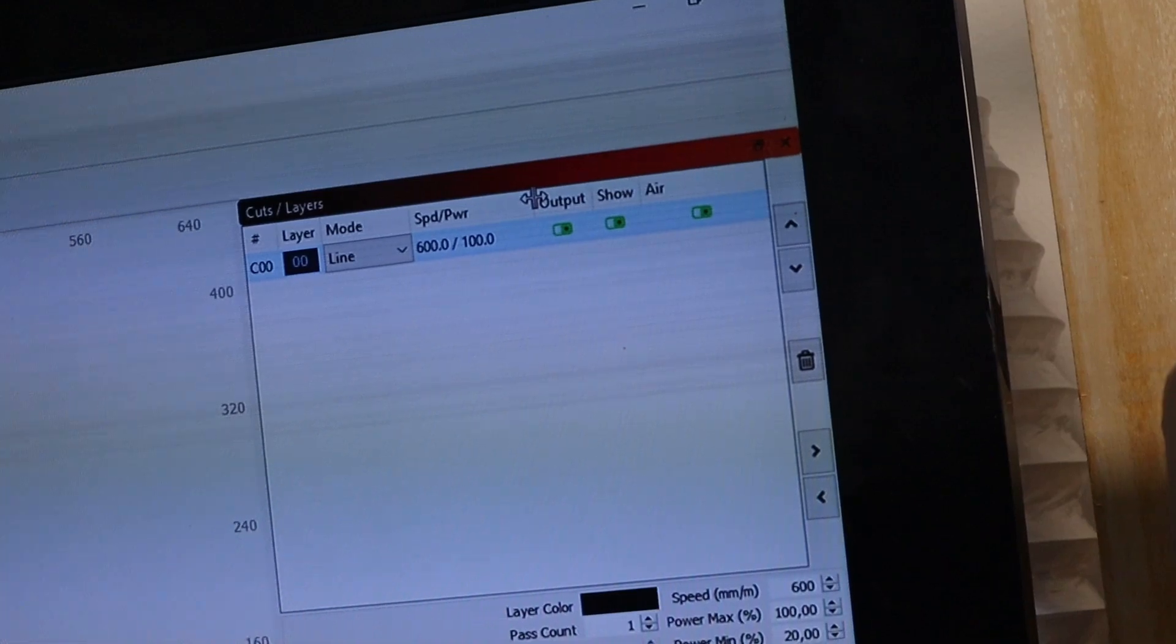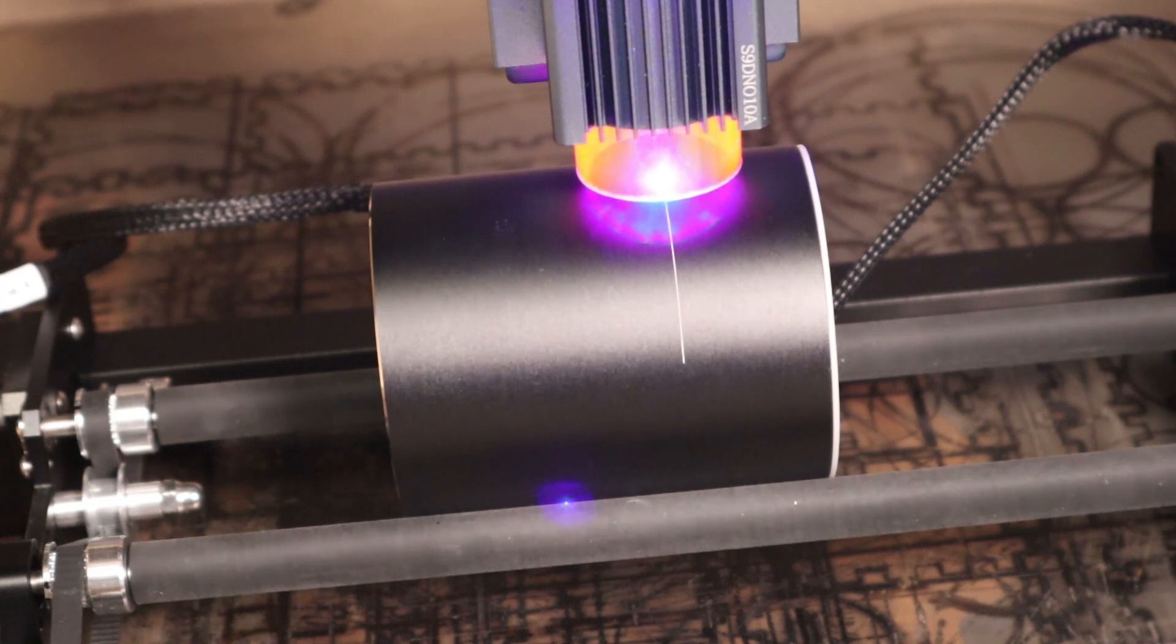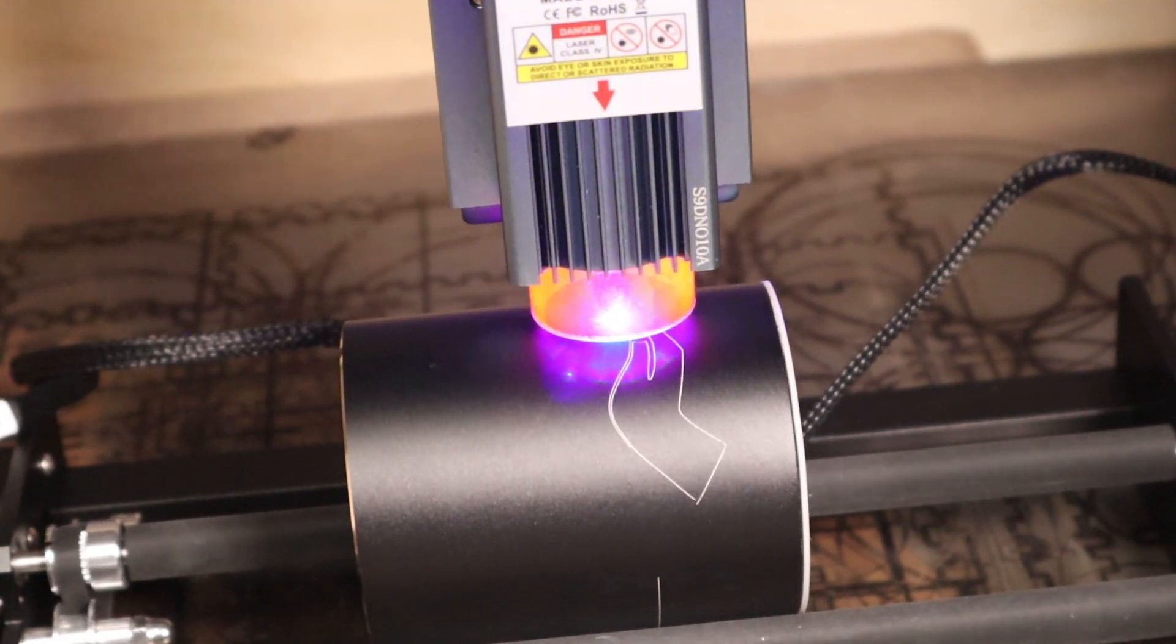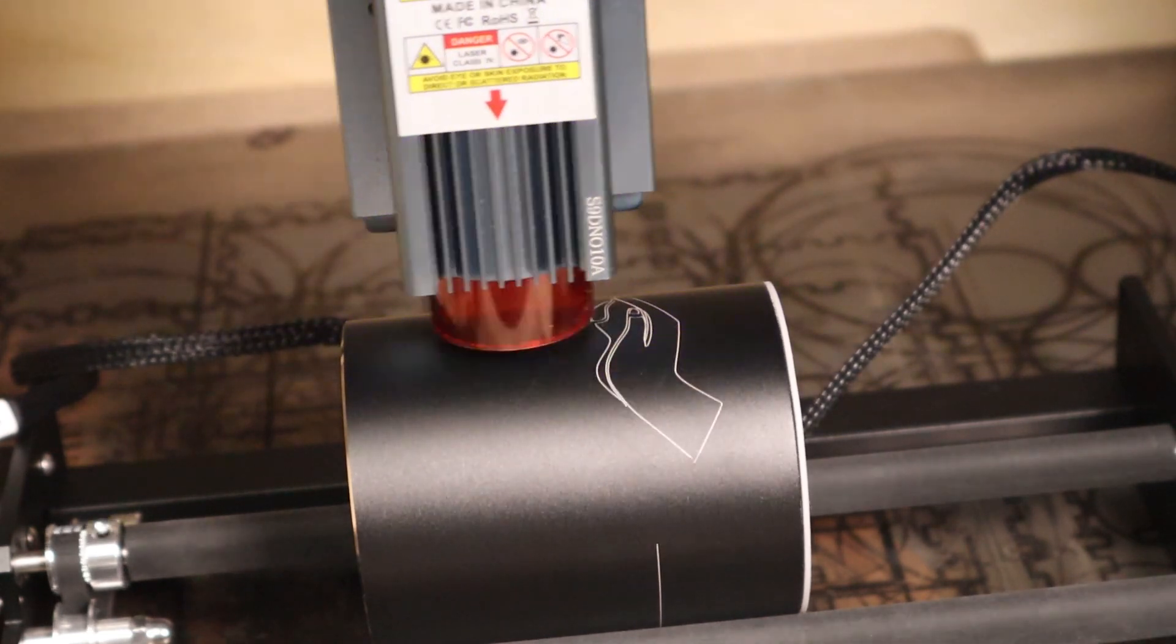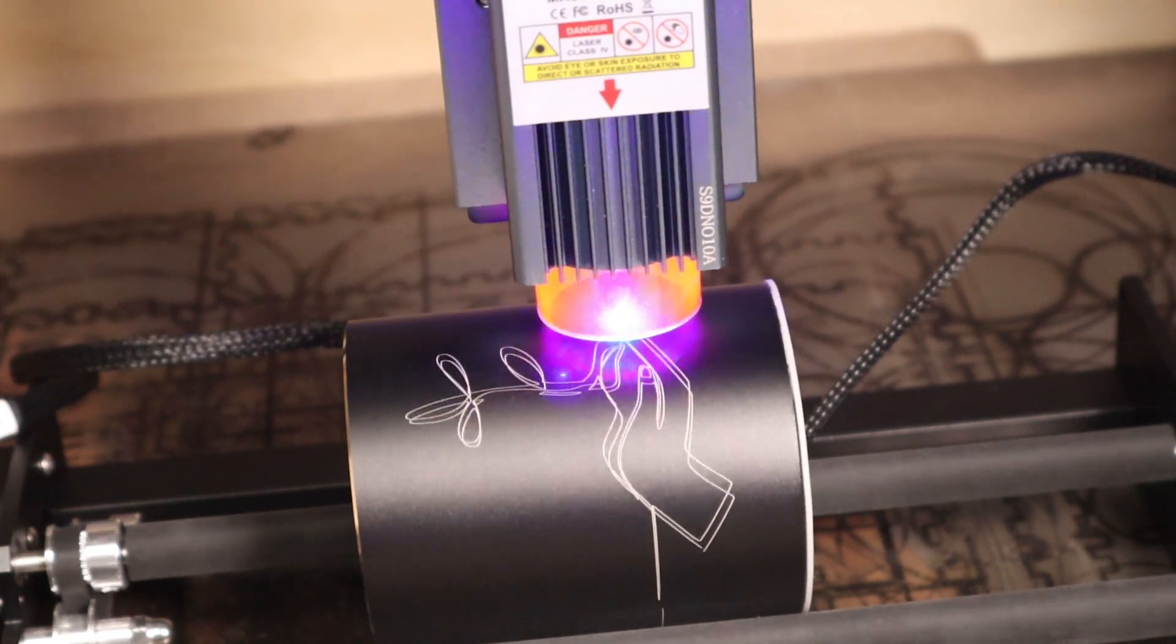But you need to watch out when engraving vector images. All of the rubber roller rotary system designs will start to lose position when engraving complex vector images. The engravings will start to get offset, like this pattern I tried to engrave on this cup. This is why you should always use line by line scanning.